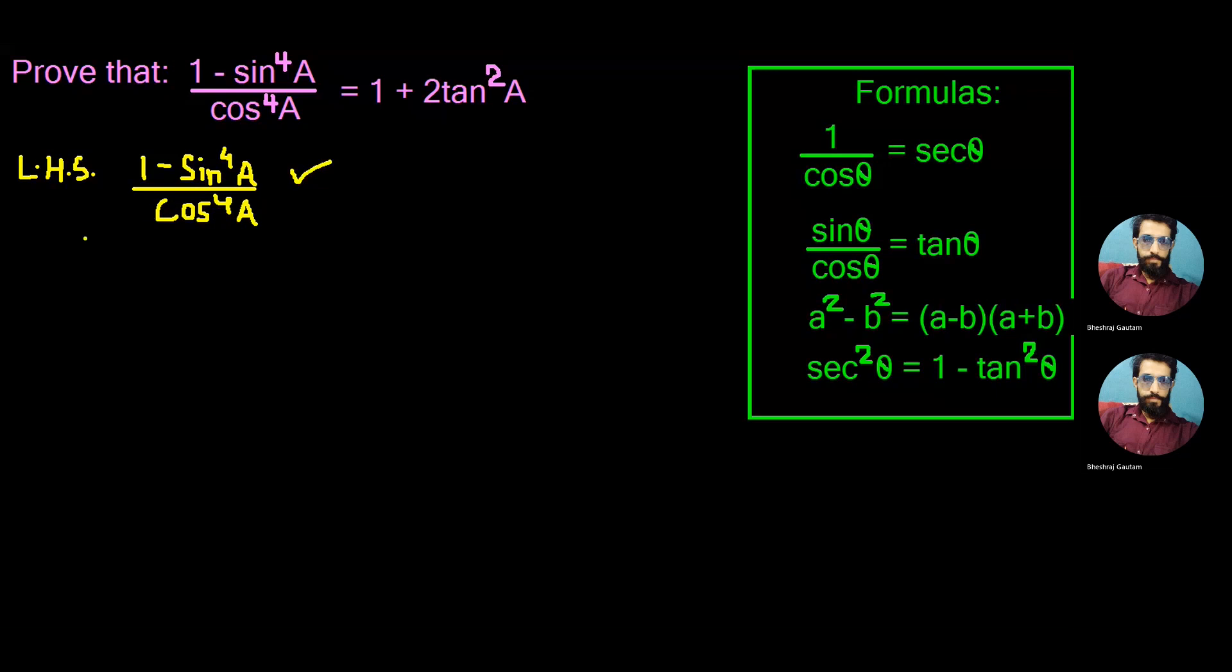Now we can distribute the denominator cos power 4A to both the components of the numerator as 1 by cos power 4A minus sin power 4A by cos power 4A.